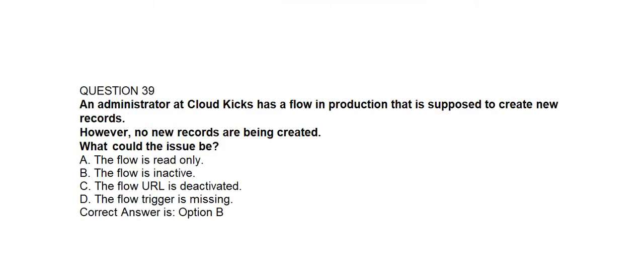Question number thirty-nine. An administrator at Cloud Kicks has a flow in production that is supposed to create new records. However, no new records are being created. What could the issue be? Option A: The flow is read only. Option B: The flow is inactive. Option C: The flow URL is deactivated. Option D: The flow trigger is missing. Correct answer is Option B: The flow is inactive.